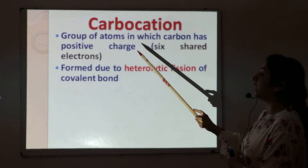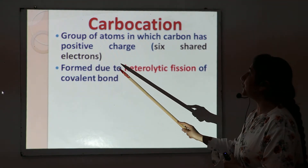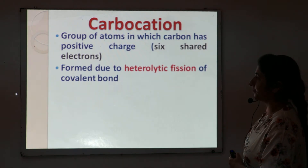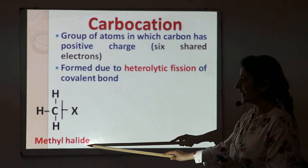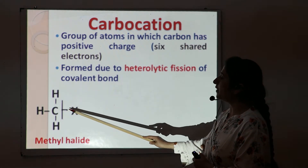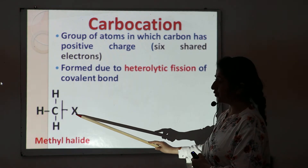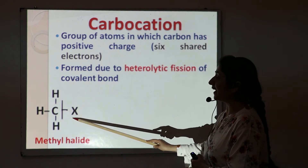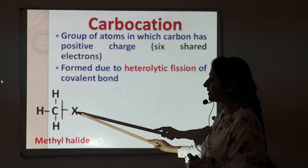So how do they form? They are formed due to the heterolytic fission of a covalent bond. To explain it, I am taking the example of methyl halide. In this case, there is a covalent bond between carbon and halogen. As we know, the halide ion is more electronegative as compared to carbon due to its small size.